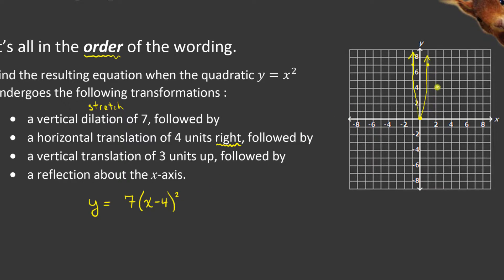So what happens to my graph over here? Well, if we take a look at this parabola, it is going to shift to the right by 4. Okay, so the vertex moves over to 4. The points that I had over there move over to the right by 4 as well. Okay, then it says followed by.